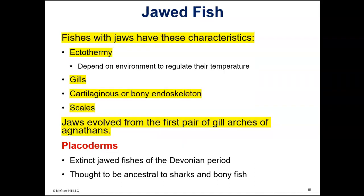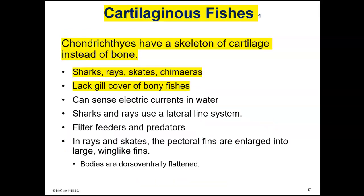Now we're going to move on to the jawed fish. Fishes with jaws are ectothermic. They have gills, and they either have a skeleton of cartilage or bone, and they have scales. The cartilaginous fishes are the class Chondrichthyes — 'chondri' means cartilage, 'ichthyes' means fish. The Chondrichthyes are the cartilaginous fishes, and they include the sharks, rays, skates, and chimeras.